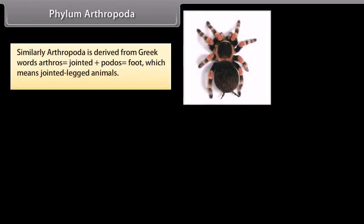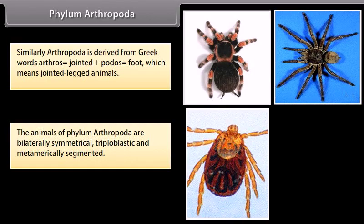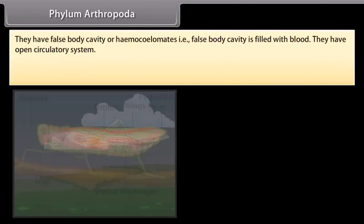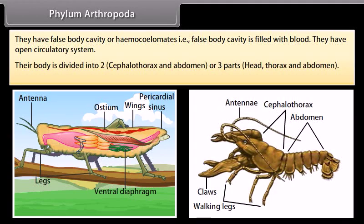Phylum Arthropoda. Arthropoda is derived from Greek words: arthros, meaning jointed, plus podos, meaning foot — jointed-legged animals. The animals of Phylum Arthropoda are bilaterally symmetrical, triploblastic, and metamerically segmented. They have a false body cavity, or haemocoel — false body cavities filled with blood. They have an open circulatory system. Their body is divided into two parts — cephalothorax and abdomen — or three parts: head, thorax, and abdomen.